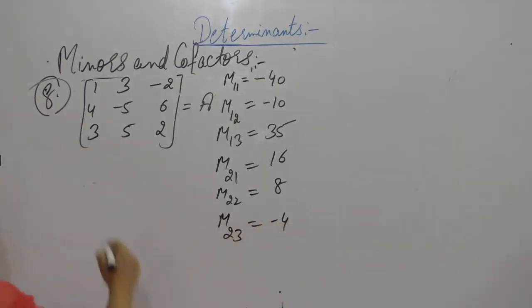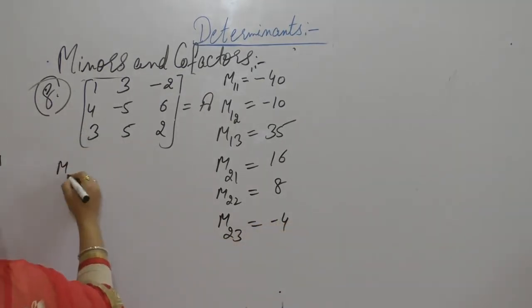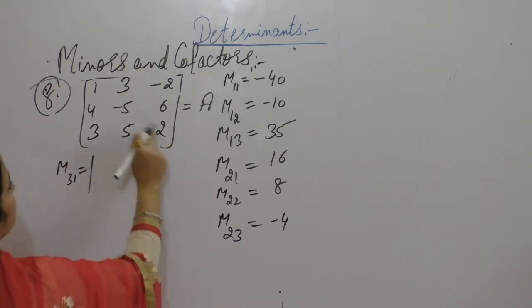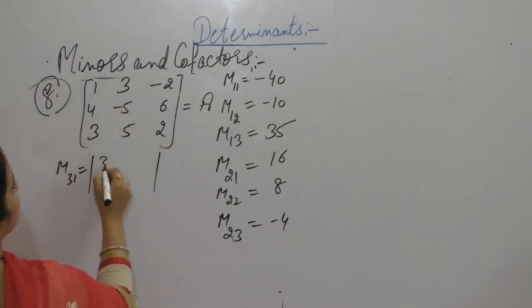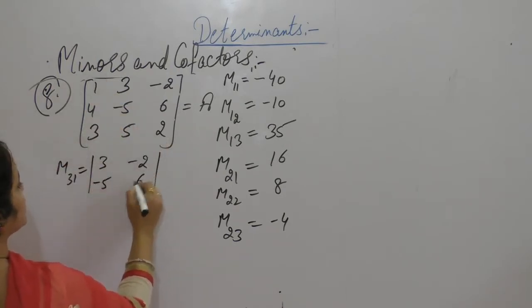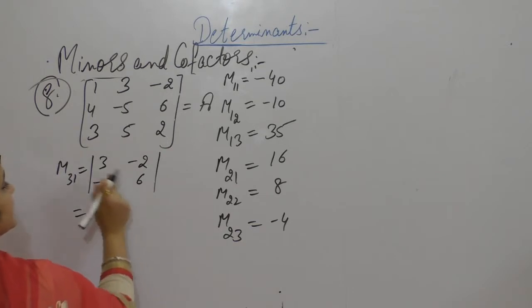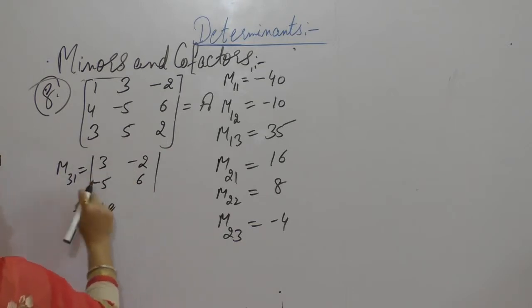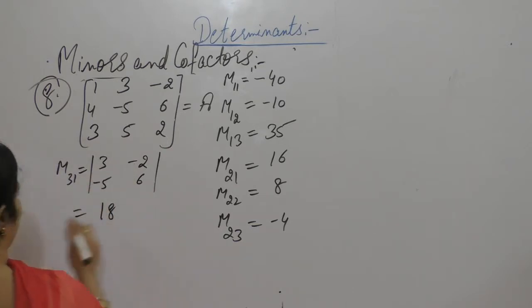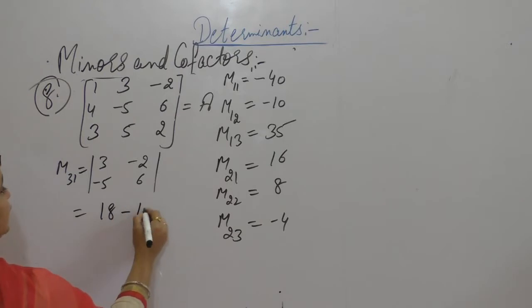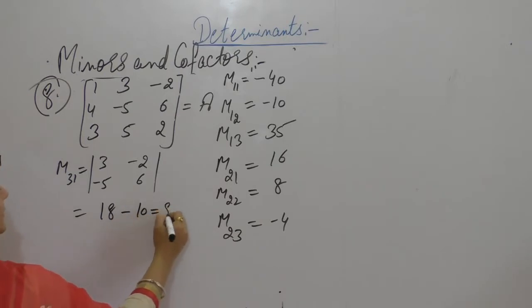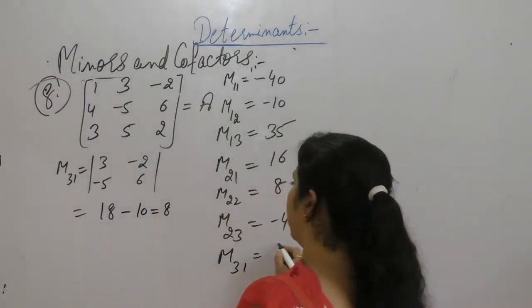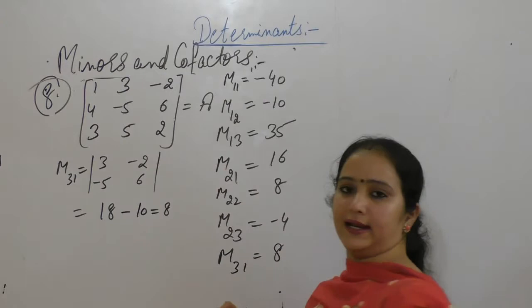Now next, M31: deleting third row and first column gives 2, 3, 3, minus 5, minus 6. 6 into 3 is 18, minus minus 5 into 2 gives 10. So M31 has value 8.